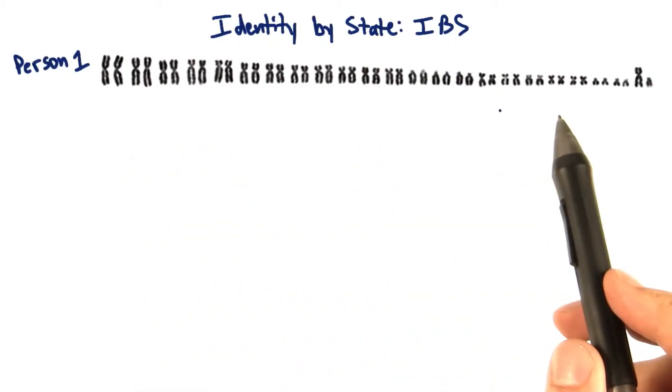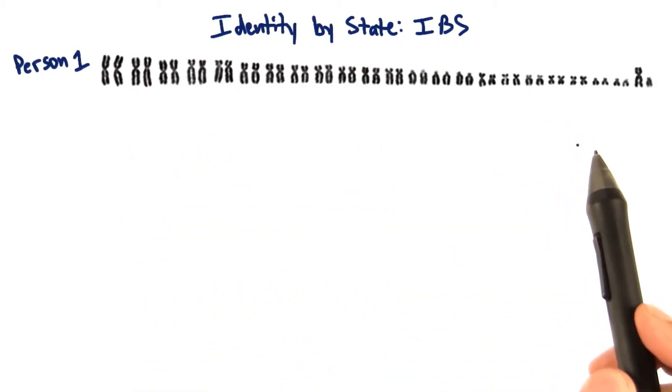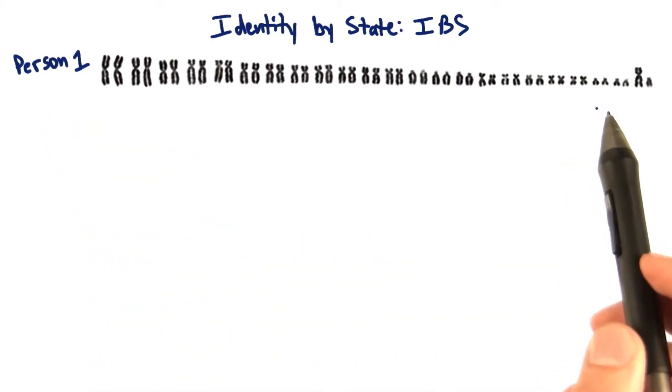Armed with our list of 1 million SNVs, we're ready to compare genomes all over the world. Now for example, we can take this genome of person 1.